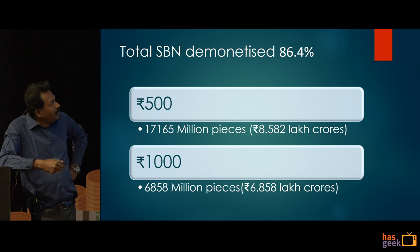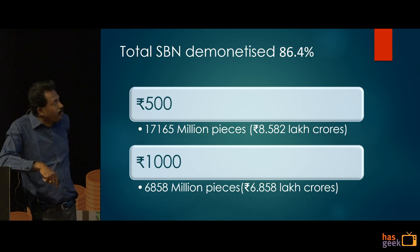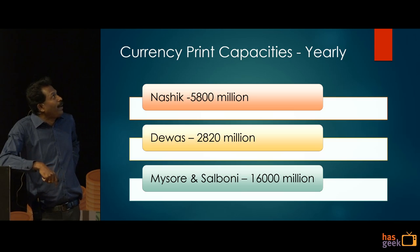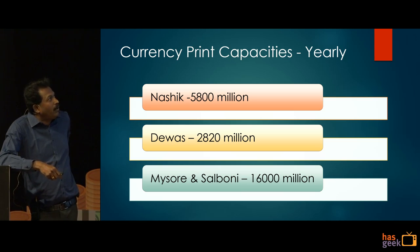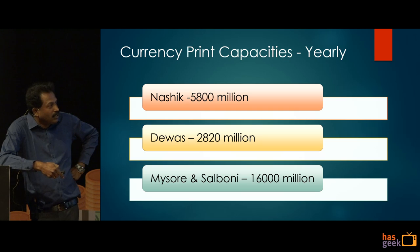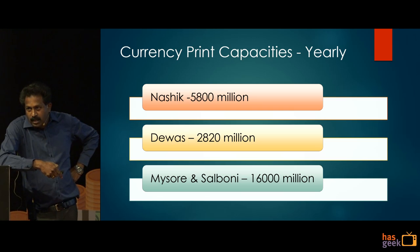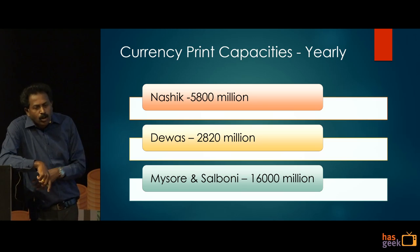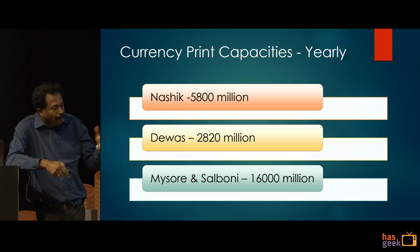The total demonetized currency: 500-rupee notes around 17-plus million notes and 1000-rupee notes around 7 million notes. The question is how you replace this. I looked into printing press capacities. Nashik is the oldest press and has a yearly capacity of 5,800 million notes; Mysore and Salboni together can do 16,000 million. I checked this against the last five years of production data and it tallies at around 24,000 million — matching their capacity.